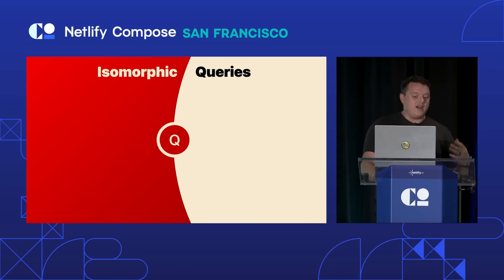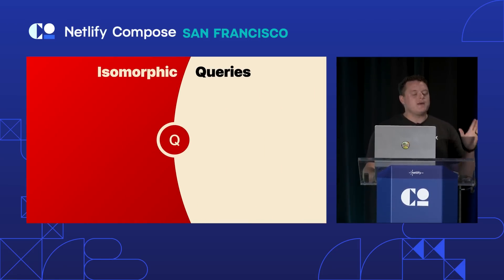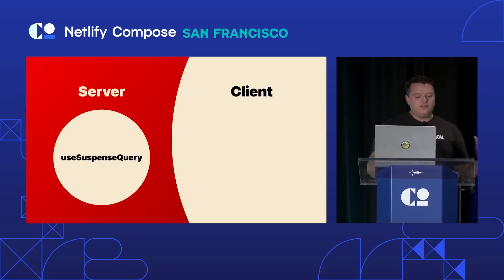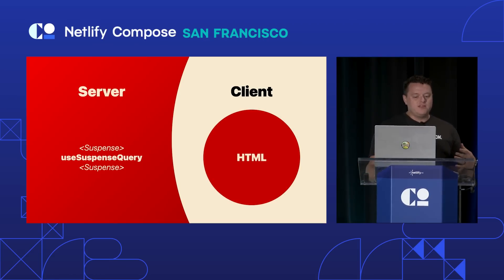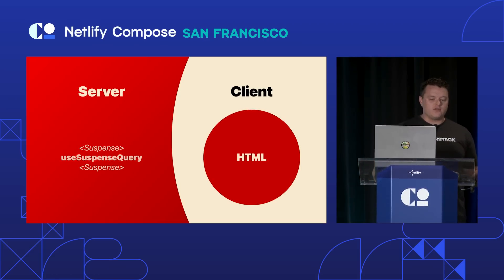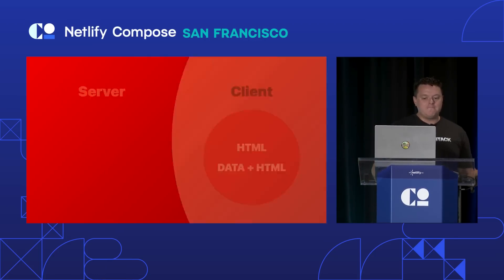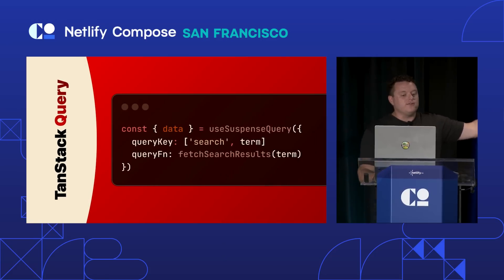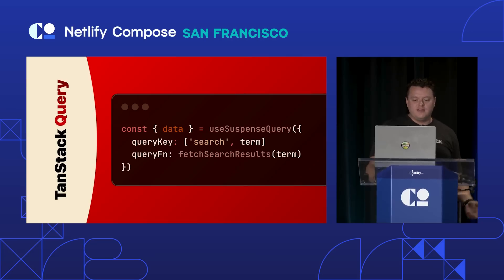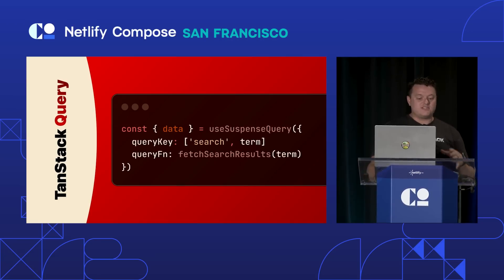This ultimately enables isomorphic data fetching with a single hook. During SSR, useSuspenseQuery can request data, and if it's not ready it will suspend so React can stream the rest of your app to the client. When the query resolves on the server, its data and the remaining HTML are streamed to the client. It's hassle-free data streaming, and you get best-in-class client-side data synchronization with a single primitive — and it's super flexible.